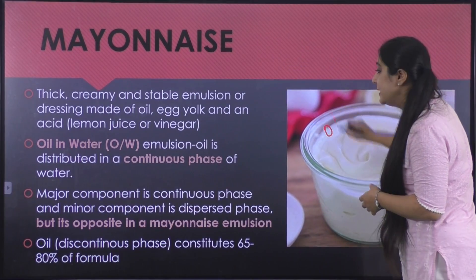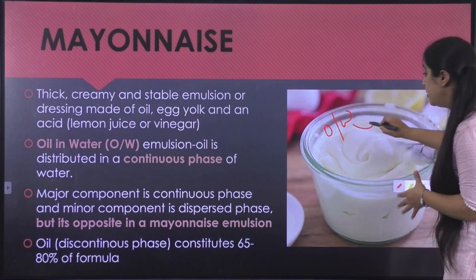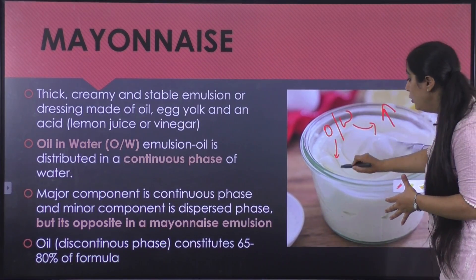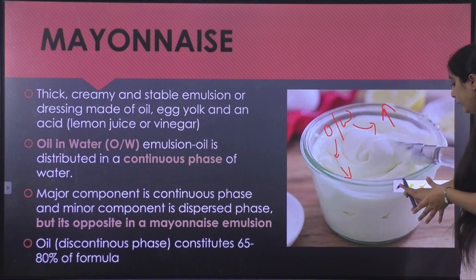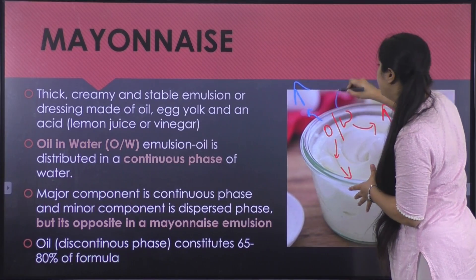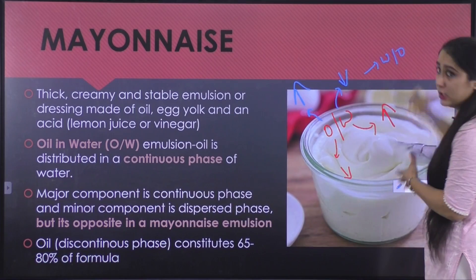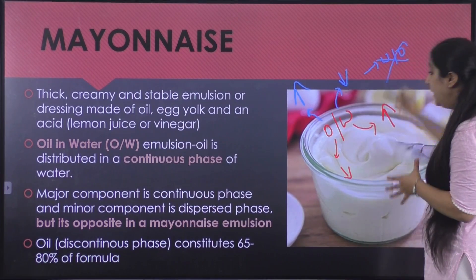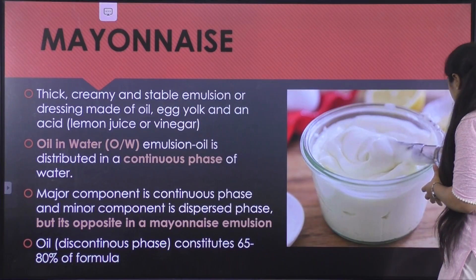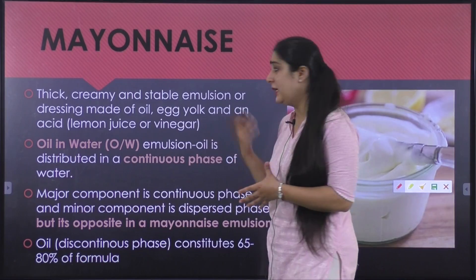If you look at mayonnaise, it is an oil-in-water emulsion. Generally in an oil-in-water emulsion, water should be present in high quantity and oil in low quantity. But in mayonnaise it is very interesting to note that oil is present in high quantity whereas water is present in low quantity — the complete opposite, and that is a very interesting thing to note.